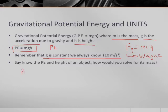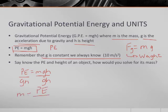If PE equals MGH and say we want to find M, we have to move the G and the H. So you divide by GH on both sides. And then you have M is equal to your potential energy. Remember, that's always just going to be one number, divided by GH.